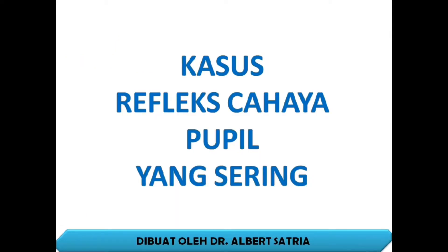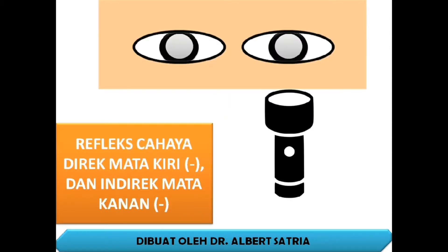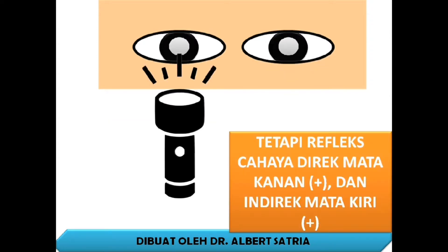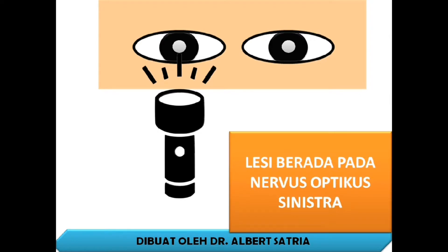Kasus refleks cahaya pupil yang sering ditemukan. Kasus pertama: refleks cahaya direct mata kiri negatif dan indirect mata kanan juga negatif. Tetapi refleks cahaya direct mata kanan positif dan indirect mata kiri positif. Di manakah lokasi lesinya? Lesi berada pada nervus optikus sinistra.